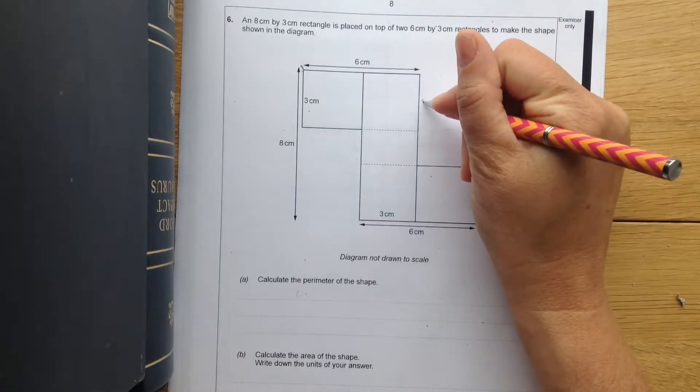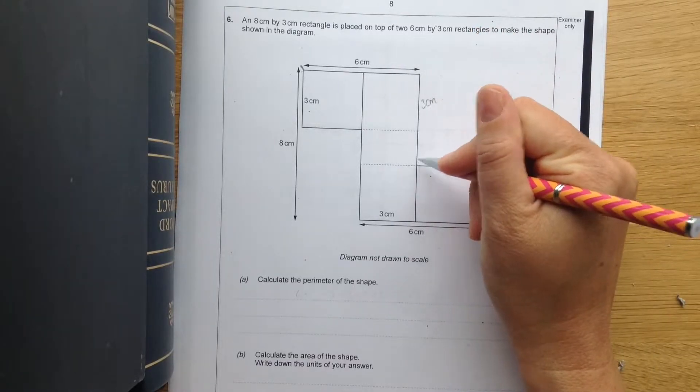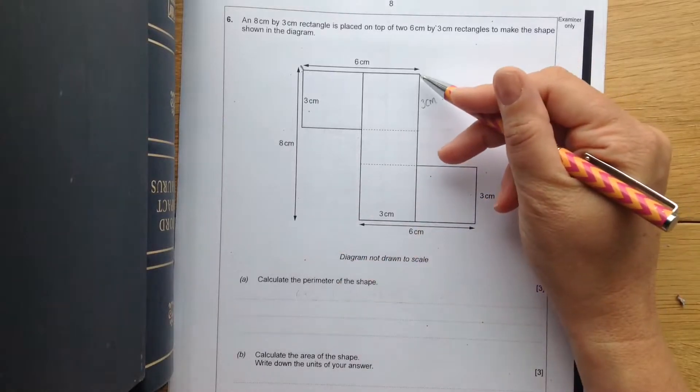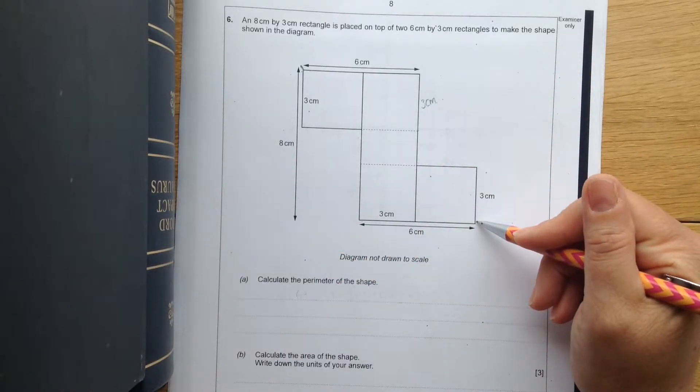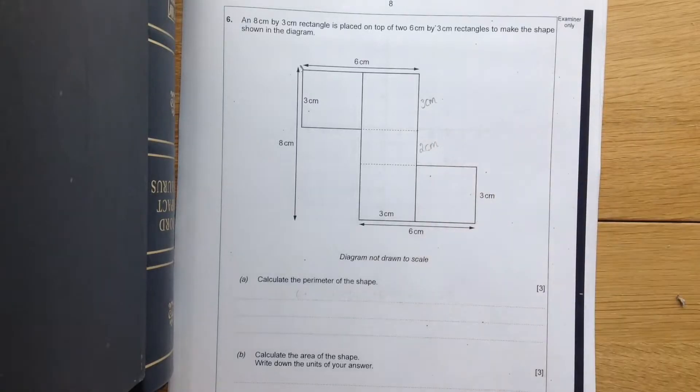So from here to here it's going to be 3cm. This length here, well if that is all 8 going down there and we've got 3 here and 3 here, to make the 8 we're going to need 2 here. So that's 2cm.